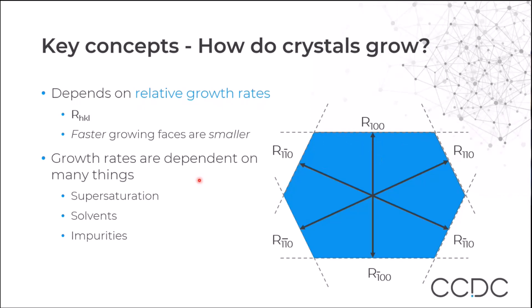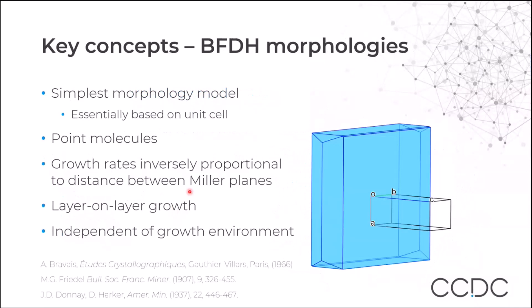These growth rates depend on many different experimental effects, such as the supersaturation, the solvents used, and whether there are any impurities in your system. We can estimate morphologies using software in the CSD that allows us to do a BFDH morphology calculation — a Bravais, Friedel, Donnay and Harker morphology. This is the simplest morphology model, based entirely upon the unit cell and any symmetry in the crystal structure, treating molecules as points without accounting for chemistry.